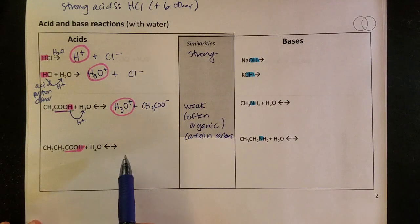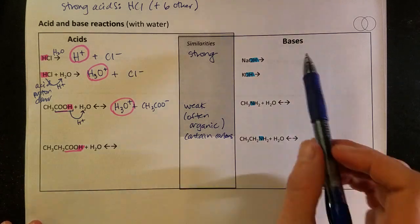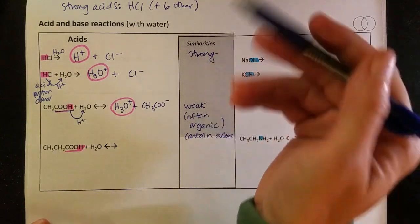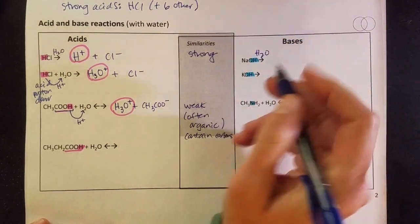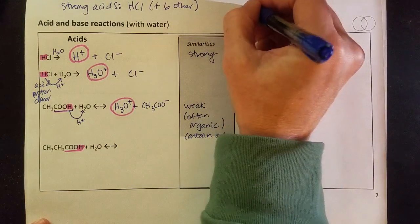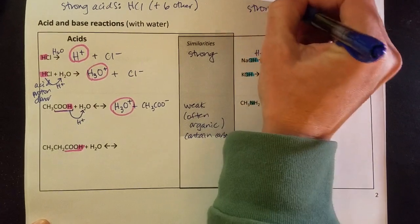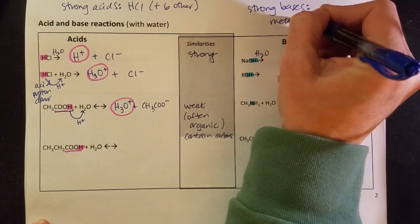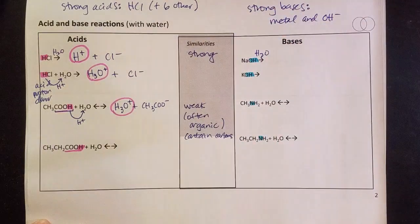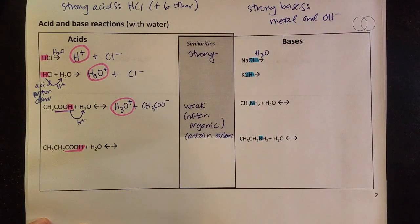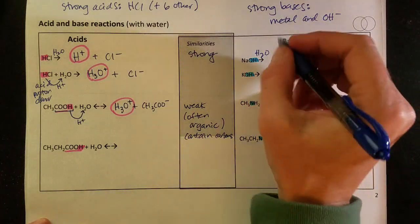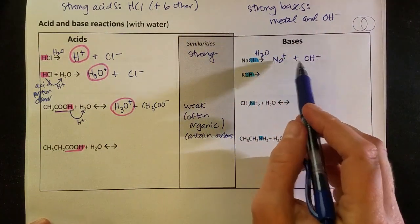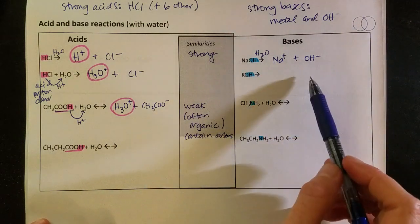I will leave this one for you to try. So taking a look over here at the bases, I have sodium hydroxide, and that is a strong base. The way you can tell your strong bases is that they always have a metal and a hydroxide in them. So strong bases all have a metal and a hydroxide. These just break apart into ions when you put them into water. I'll leave another one for you to try.